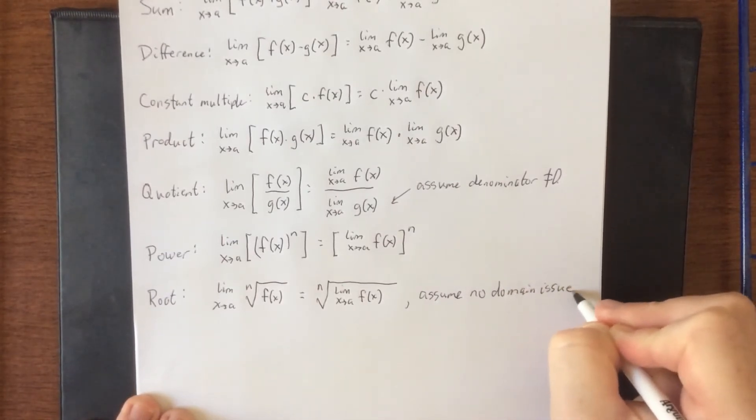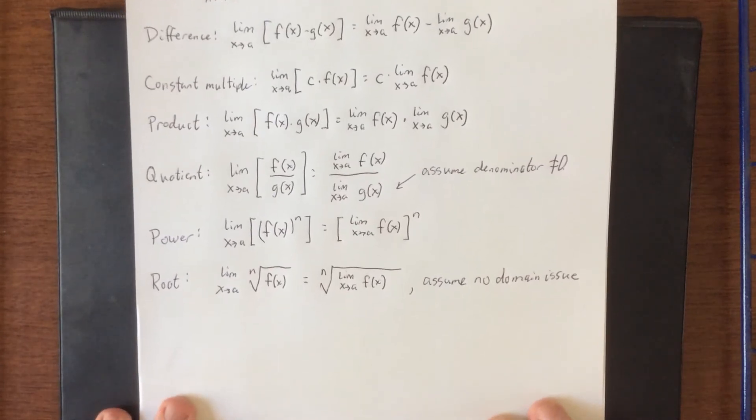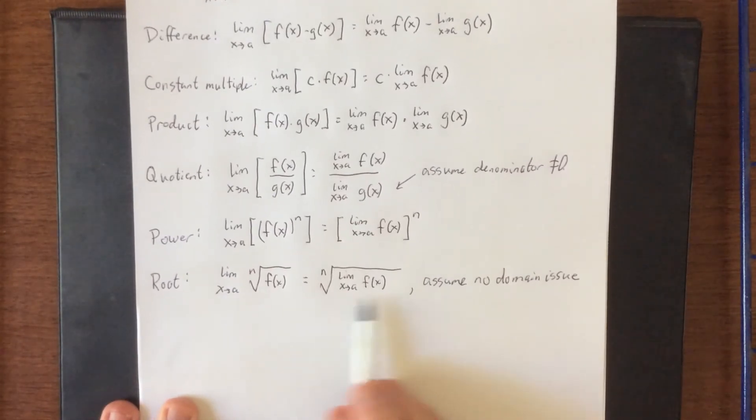And this assumes no domain issues. For example, if I'm taking an even indexed root like a square root or a fourth root, I need to know that the thing under the radical is not negative.